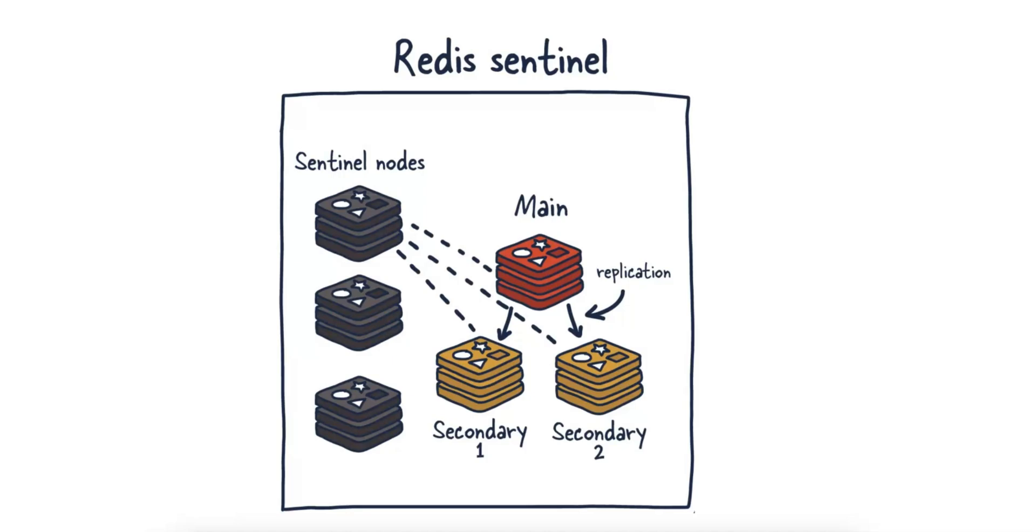In conclusion, Redis Sentinel, with master-slave replication, provides a robust, highly available, and scalable Redis architecture. It ensures that failures of the master node do not result in downtime, and that the system can automatically recover by promoting a slave to master and reconfiguring the remaining nodes.